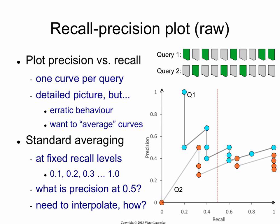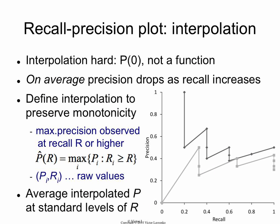So you need to interpolate. There are a bunch of different ways you could do it, but there is one standard that has been agreed upon through much pain and suffering. The standard is based on the intuition that, on average over thousands of queries, precision tends to decrease as recall increases — precision is a monotonically decreasing function of recall. So the interpolation method is designed to preserve that strict monotonic decrease.